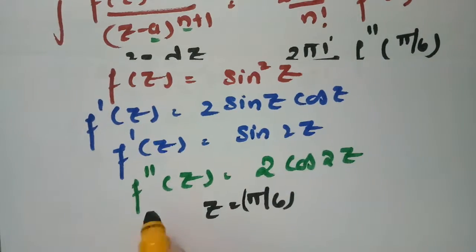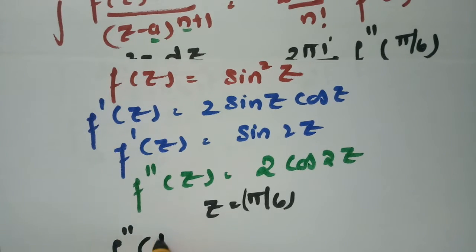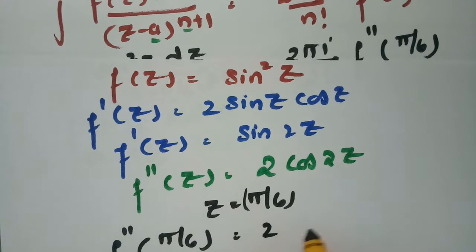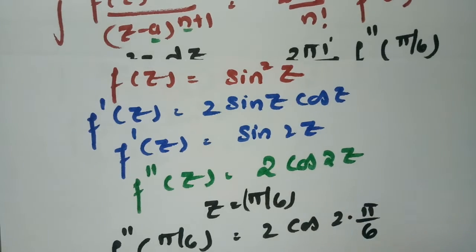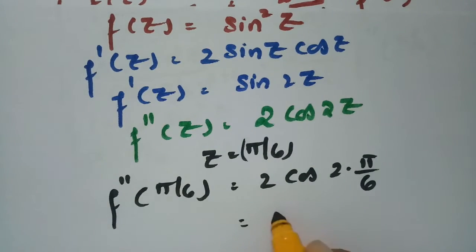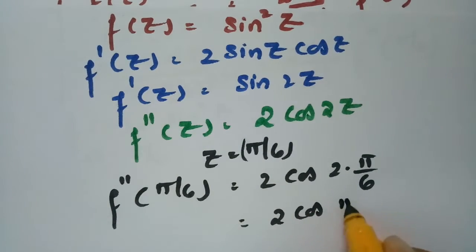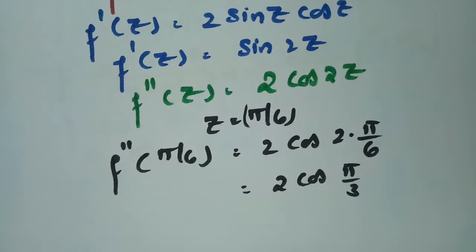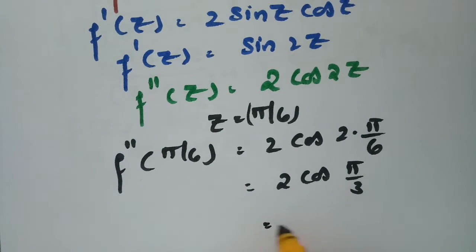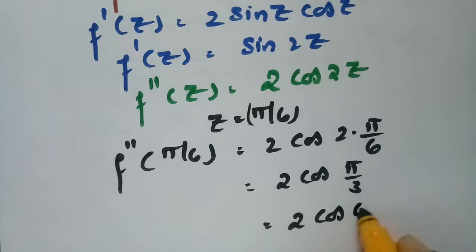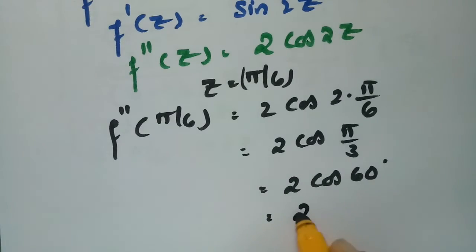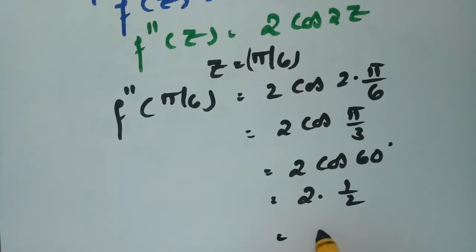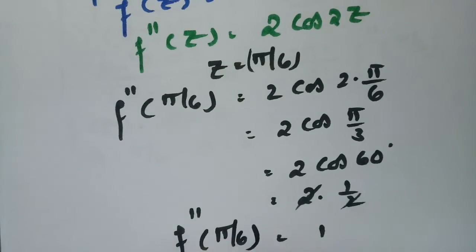Evaluating the second derivative at z = π/6: f''(π/6) = 2 cos(2 · π/6) = 2 cos(π/3) = 2 cos(60°) = 2 · (1/2) = 1. So the second derivative at π/6 equals 1.